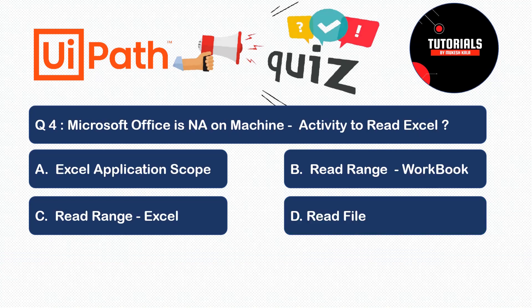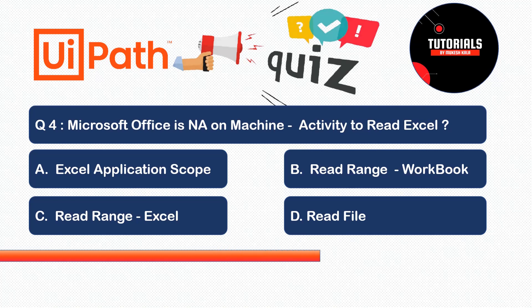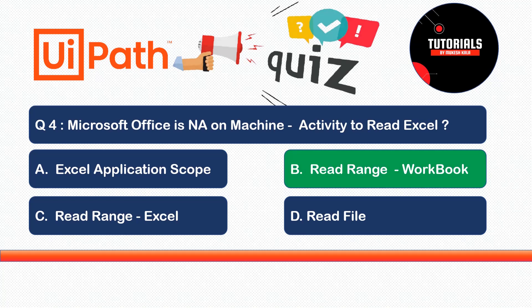Question 4: I am writing an automation and Microsoft Office is not installed on my machine. I need to read an Excel file. Which activity should I use? Options: A) Excel Application Scope, B) Read Range of Workbook, C) Read Range of Excel, or D) Read File. The correct answer is Read Range for Workbook.